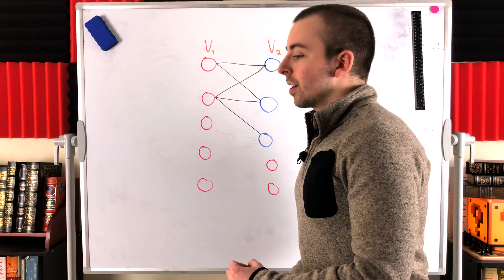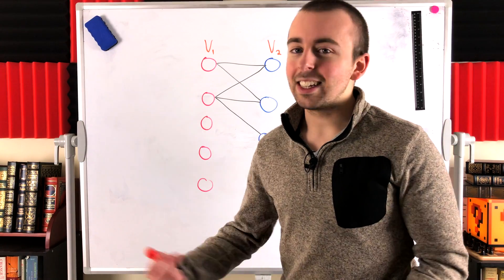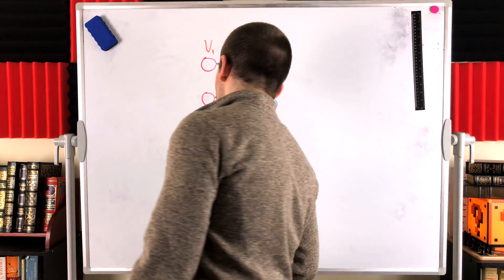In fact, if it is bipartite, you can add as many isolated vertices as you want, and you're still going to have a bipartite graph.